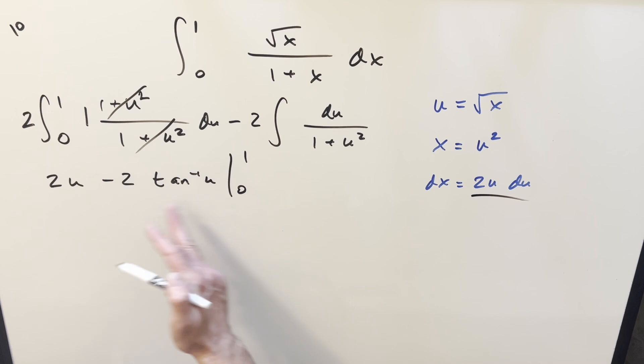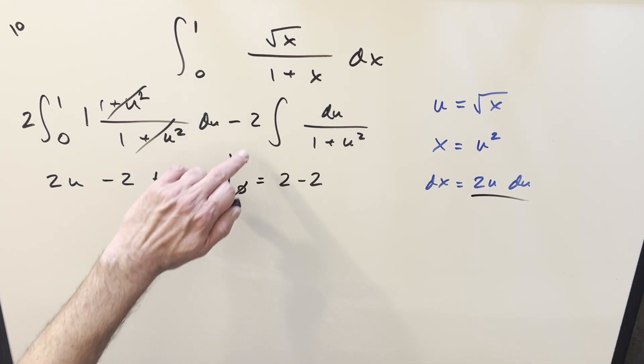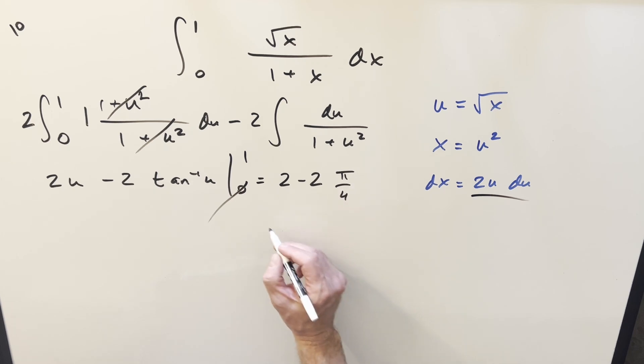Then let's notice, evaluating at 0, everything's going to be 0. Arc tan at 0 is 0. Don't worry about that one. Plug in a 1. Here we're going to have just 2 minus 2. Arc tan at 1 is going to be just pi over 4. Do a little simplification. 2 minus, distribute the 2 to the pi over 4, and we get 2 minus pi over 2. And that's going to be my solution for the first method.